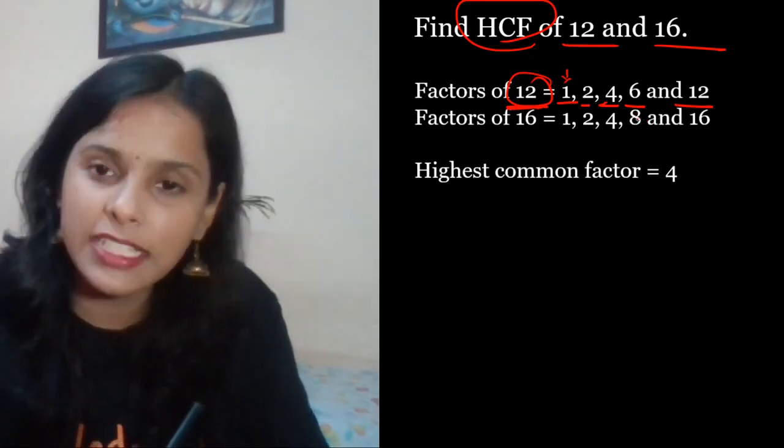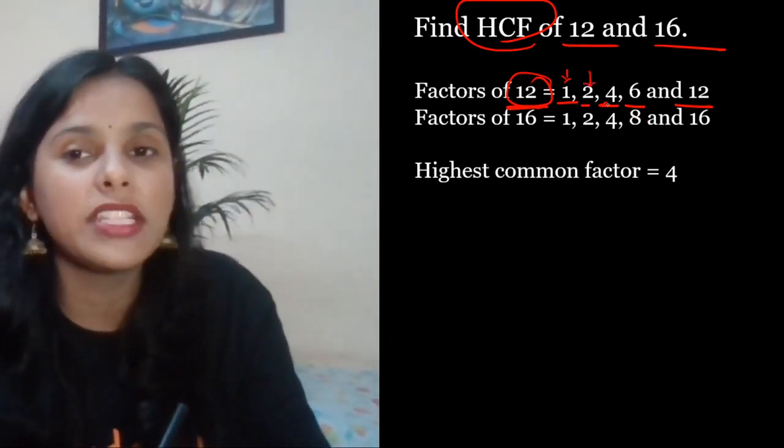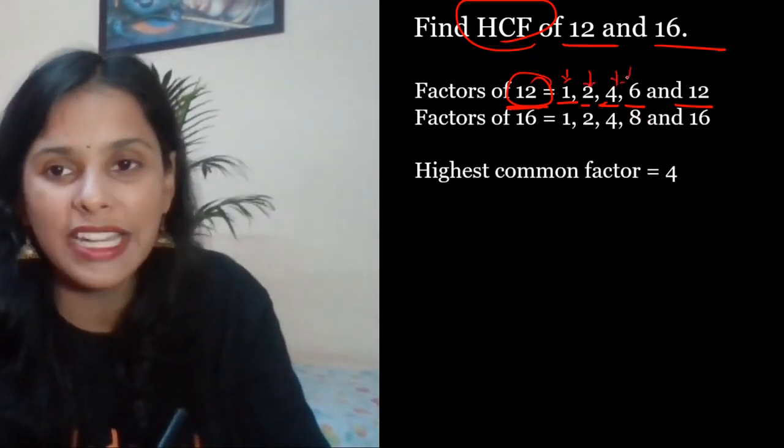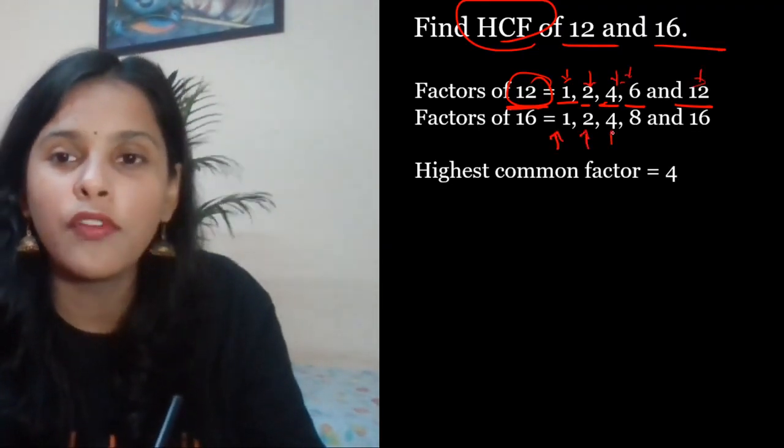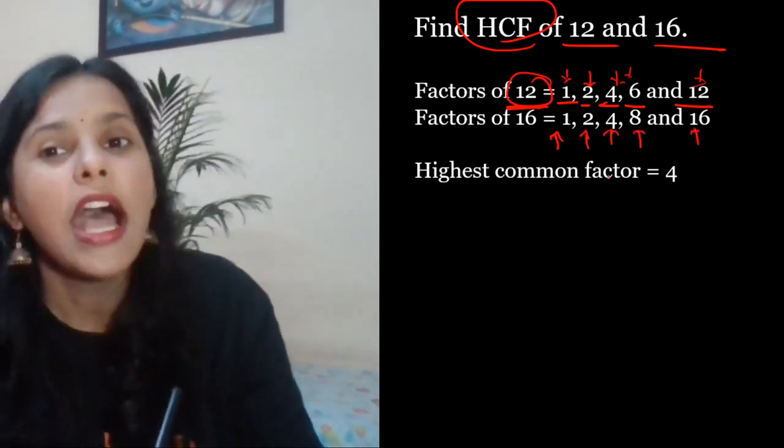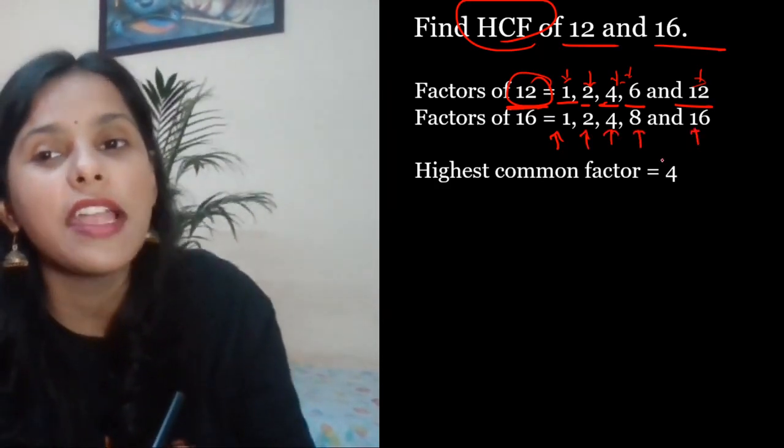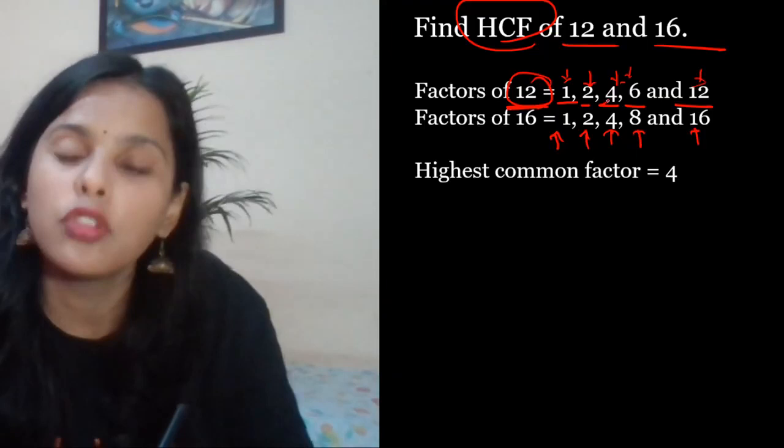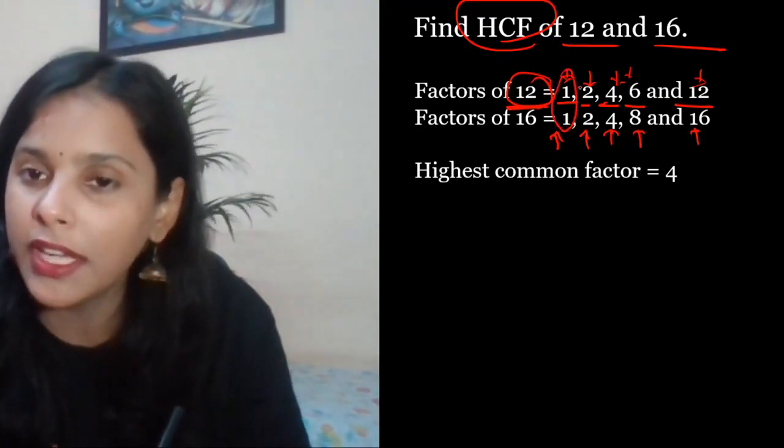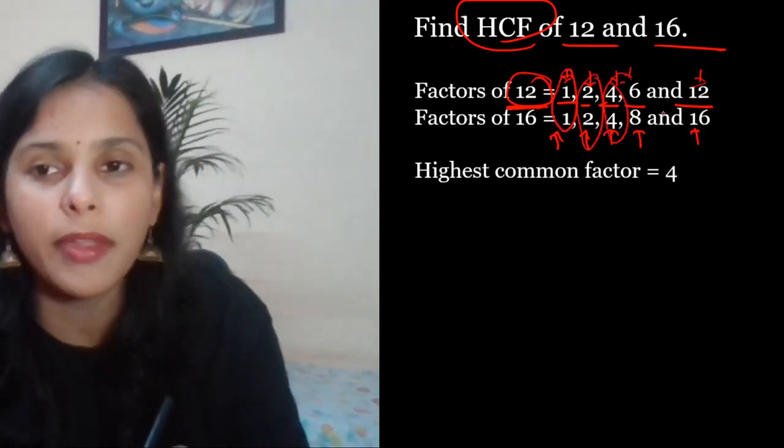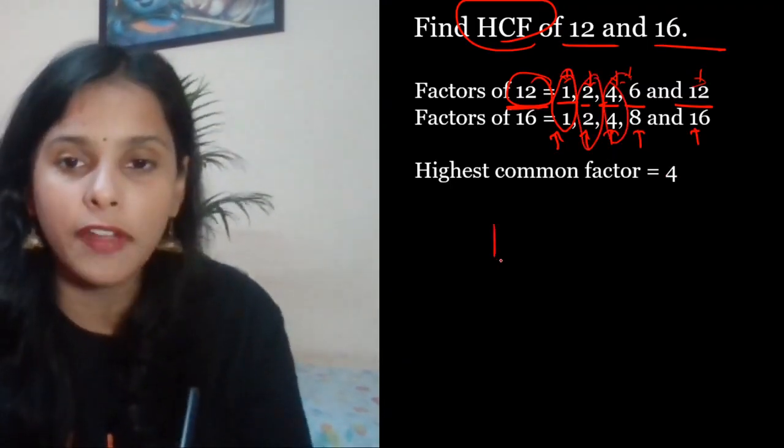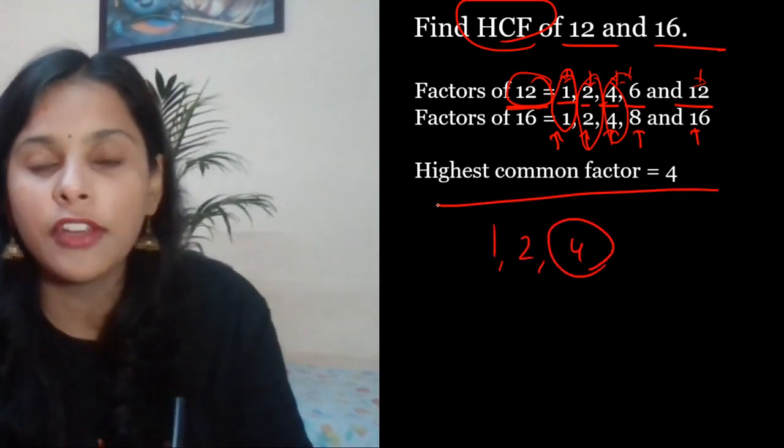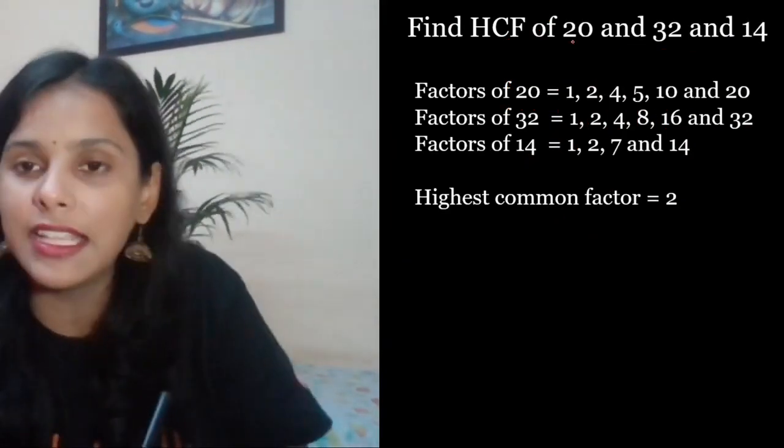The next number which can divide 12 is 2, 4, 6 and 12. Vaisi hi 16 mein 1, 2, 4, 8 and 16. Highest common factor kiya al mil rahe hai yaapar? Highest common - chou common hai pahele nikaal lo. 1 common hai, 2 common hai, 4 common hai. Uske baad mujha nahi dikha ra koji common. Tho isme highest kone hai 1, 2, 4 mein? Sabse bada 4. Therefore HCF is 4.